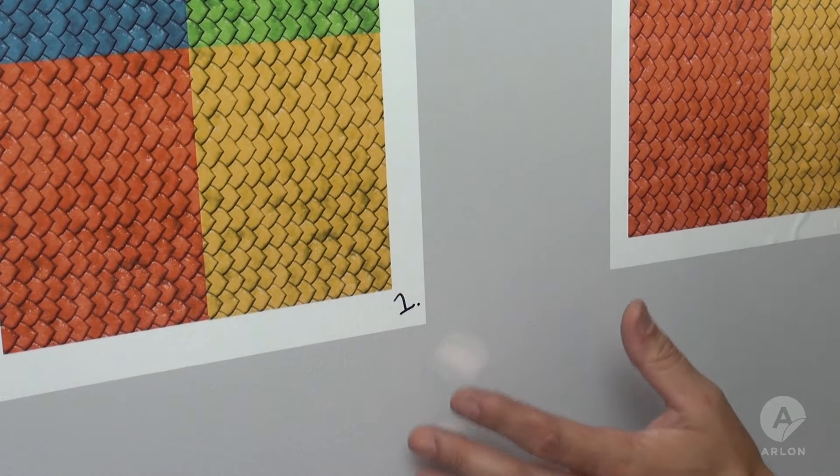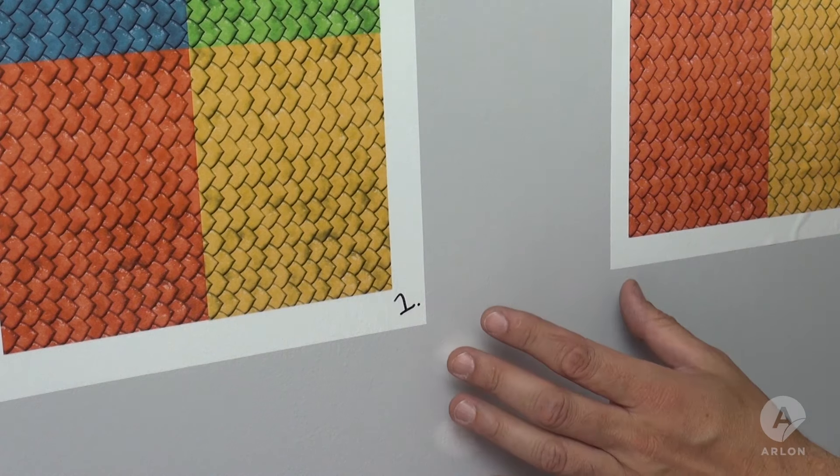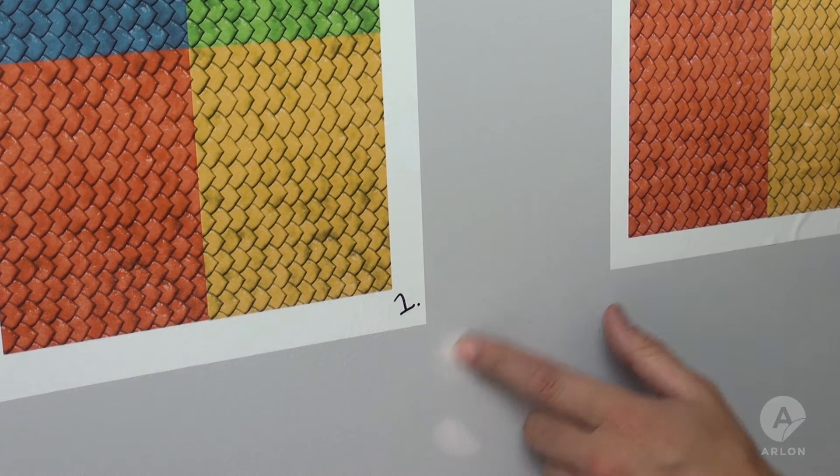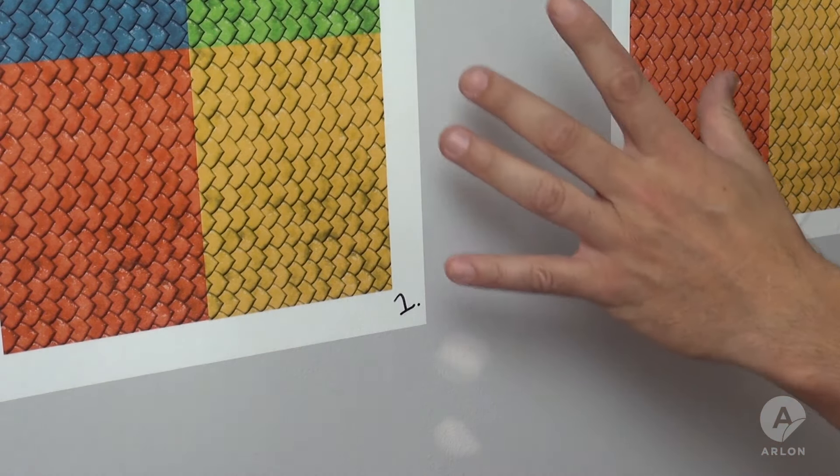On both samples, the vinyl did not shrink. Shrinkage is detected by severe edge roll, or an outline of adhesive around the edge of the graphic.